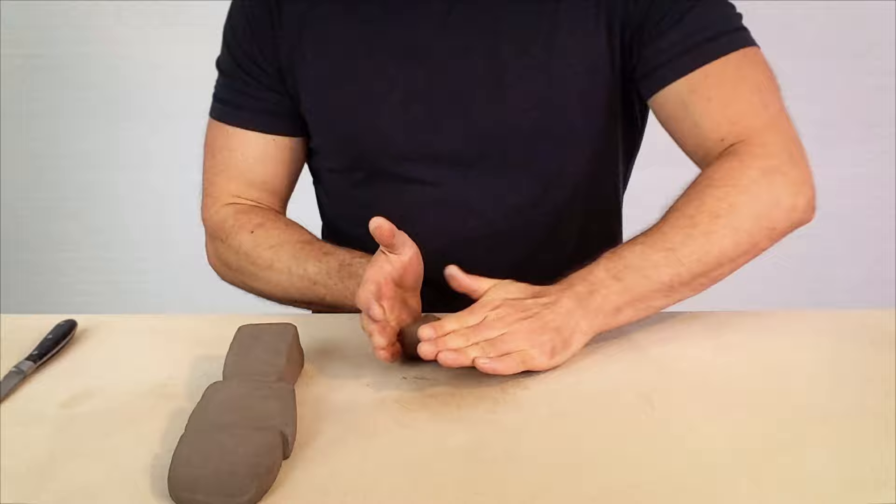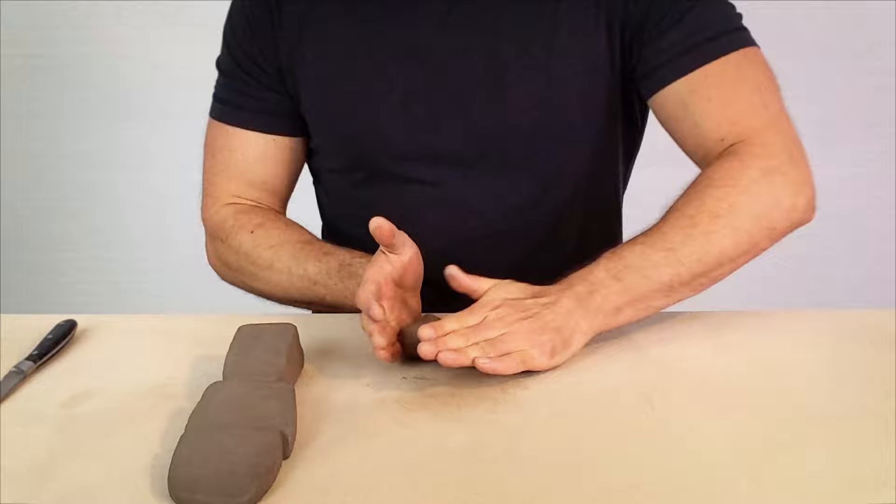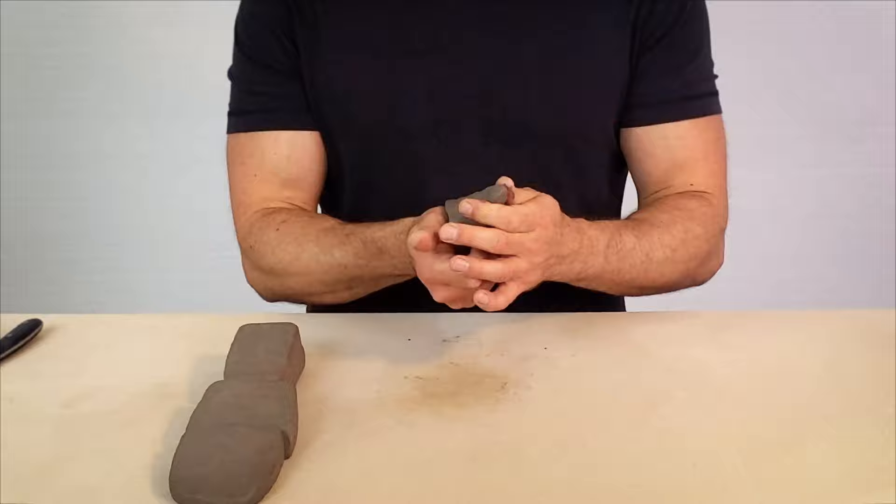Finally, from the smaller third, shape the thumb. Start with a cone. Then, flatten the base at an angle to form what will be the ball. Pinch out and shape the thumb itself.